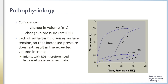In patients with RDS, there is significant decrease in lung compliance, which is the change in volume in milliliters divided by the change in pressure in centimeters of water. In the normal pressure-volume curve, an increase in pressure results in a corresponding increase in volume delivered to the lungs. However, in lungs with RDS or hyaline membrane disease, an increase in distending airway pressure results in only a minimal increase in volume, because the lack of surfactant increases surface tension. Thus, an infant with RDS may need increased pressure initially to expand the alveoli.